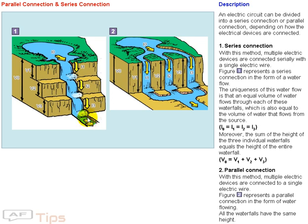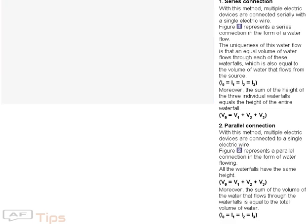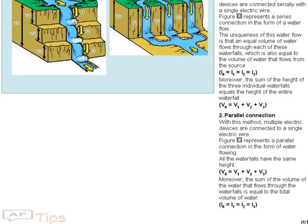2. Parallel connection. With this method, multiple electric devices are connected to a single electric wire. The figure represents a parallel connection in the form of water flowing. All the waterfalls have the same height: V0 equals V1 equals V2 equals V3.